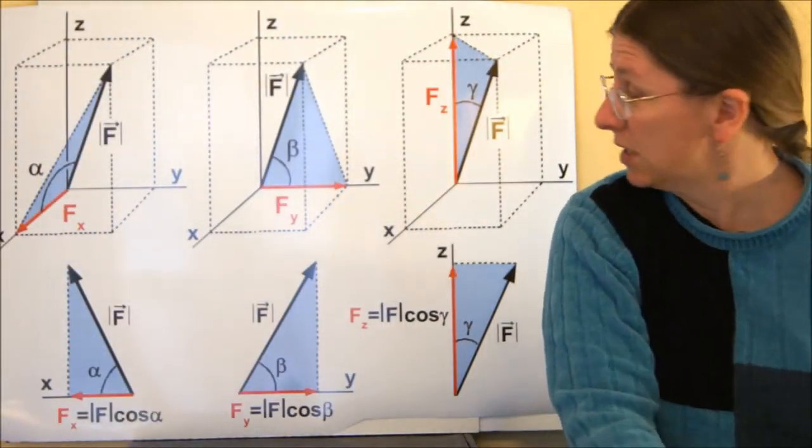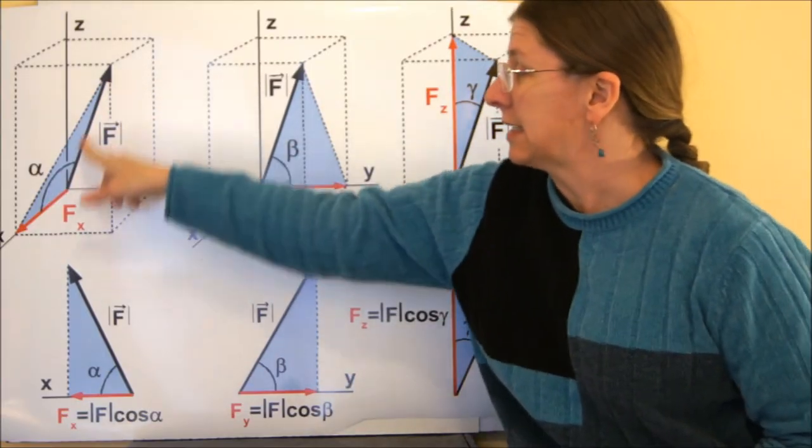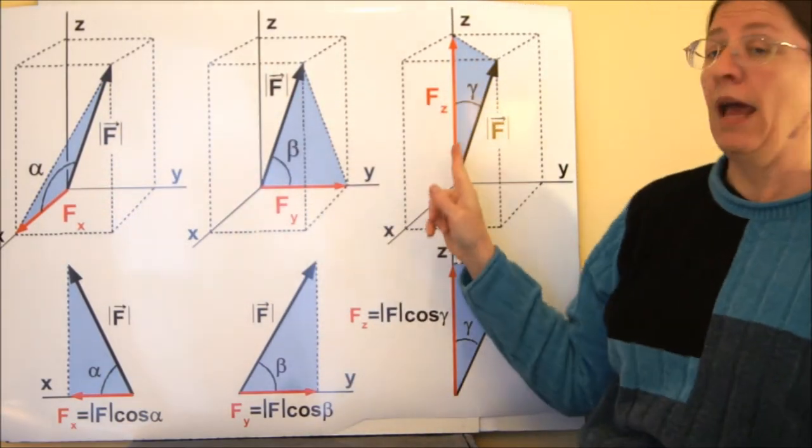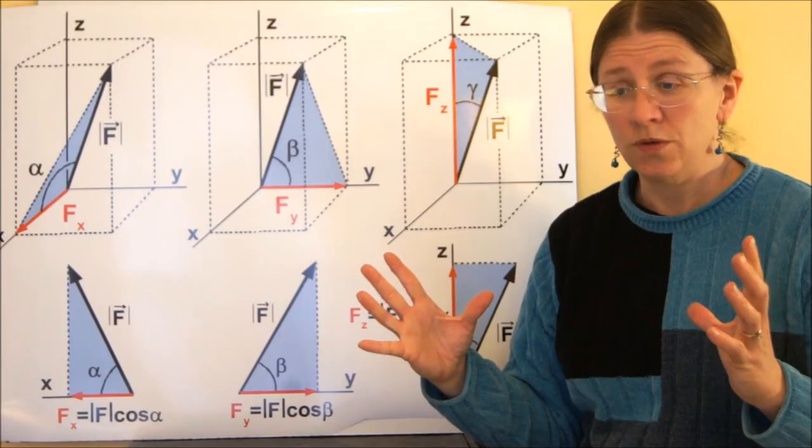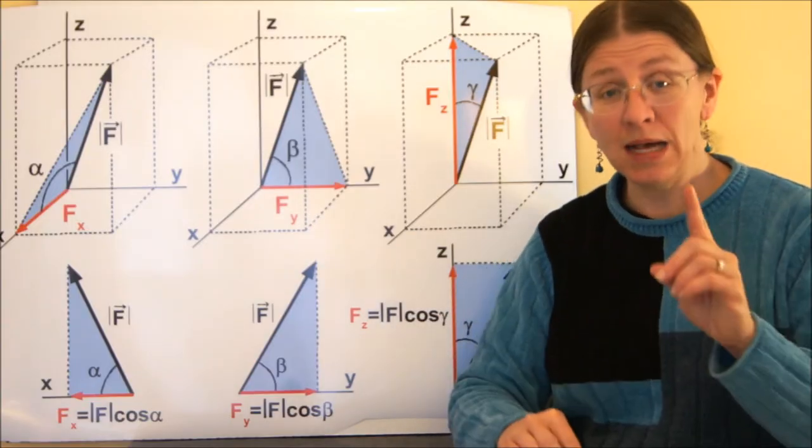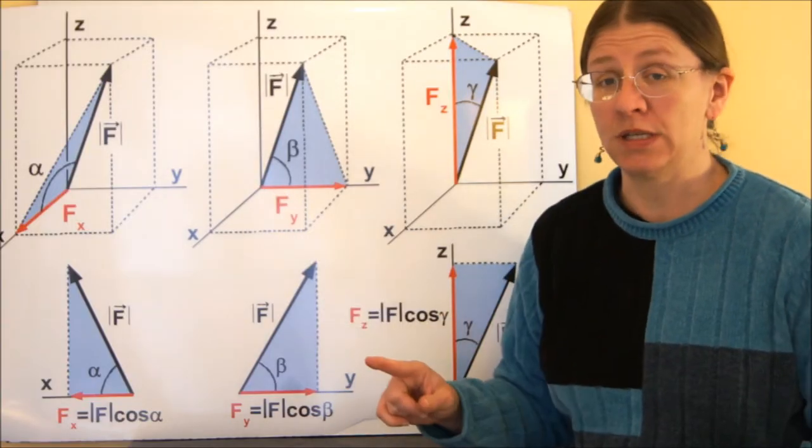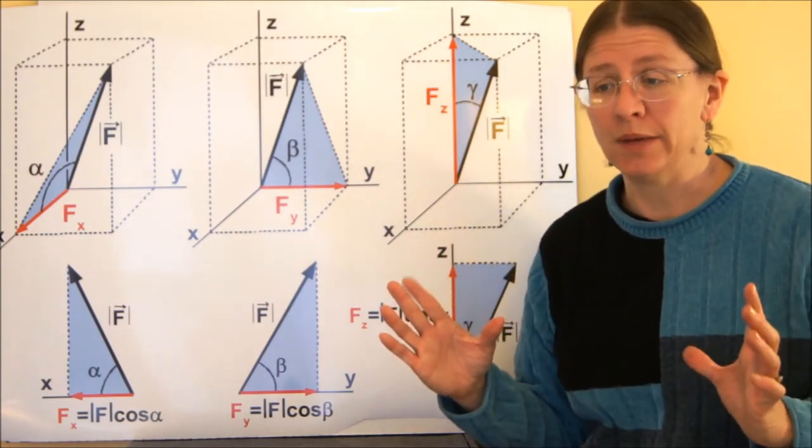The other way to do this is with direction cosines. Direction cosines takes this vector and for each of these three angles, they're measured between one of the coordinate axes, the positive coordinate axis, and the vector itself. So you've got these three angles, alpha, beta, and gamma.